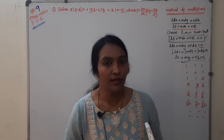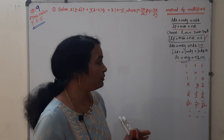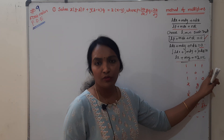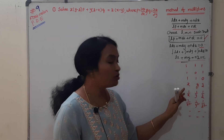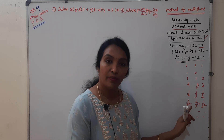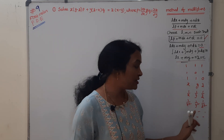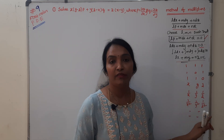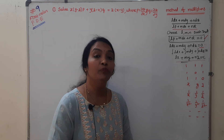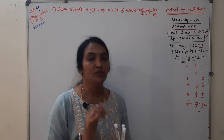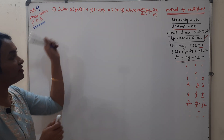If we use the multipliers, they could be 1, 1, 1, or x, y, z, or 1/x, 1/y, 1/z, or 1/x², 1/z², 1/y². It depends upon our criterion. If you have problems solved, you will have a clear picture.